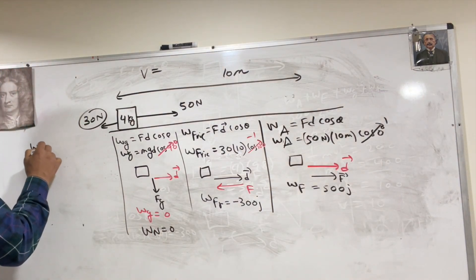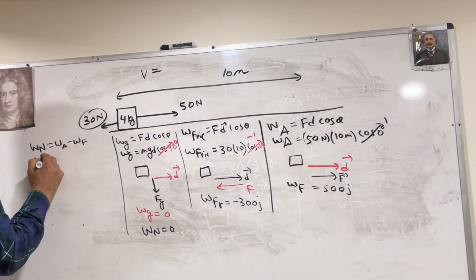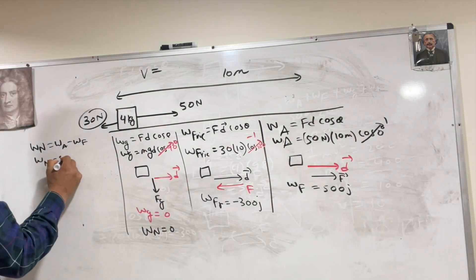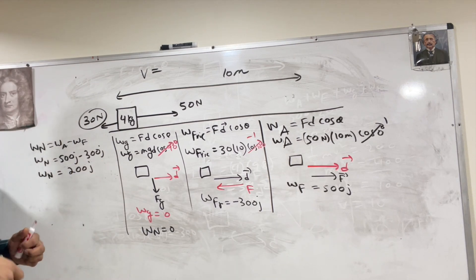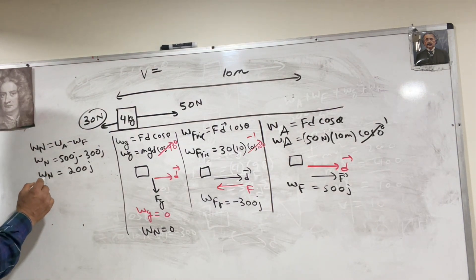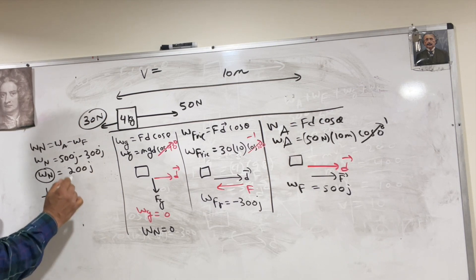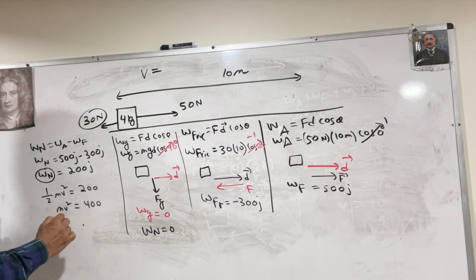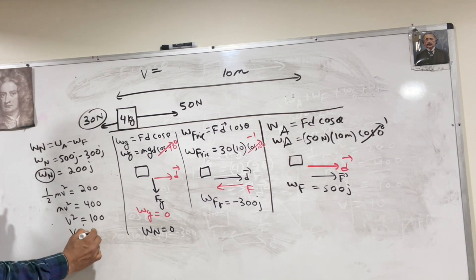Net work is work done by applied force minus work done by friction. Net work done on this mass would be 500 joules minus 300 joules, so net work is 200 joules. Now our goal is to find the velocity. Work is also half Mv squared, so half Mv squared equals 200. Mv squared equals 400. Mass is 4, so divide both sides by 4 — V squared is 100, so V is 10 meters per second.